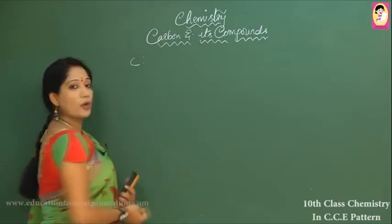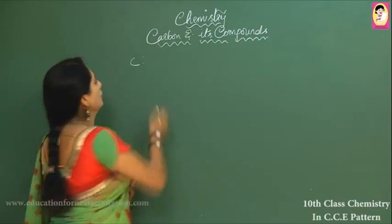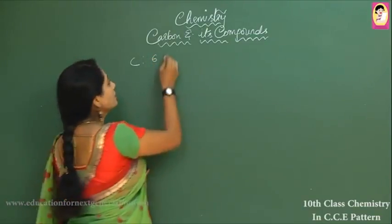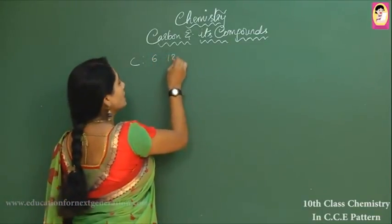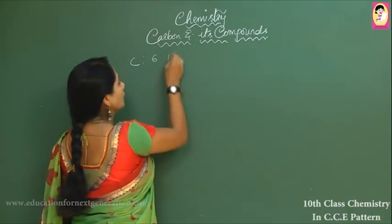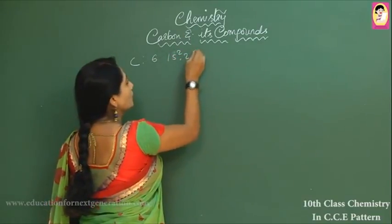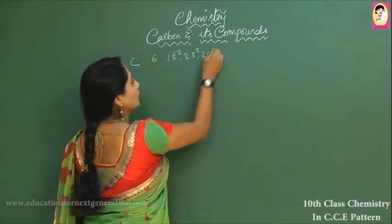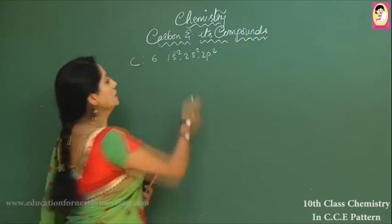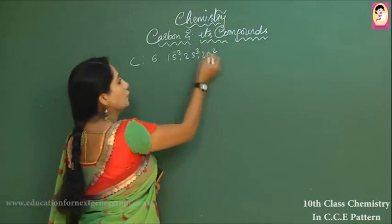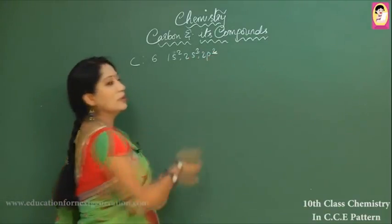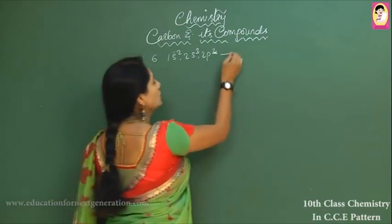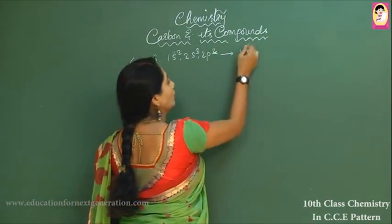Carbon has the atomic number six. Its electronic configuration is 1s² 2s² 2p², because carbon has four electrons in its valence shell.